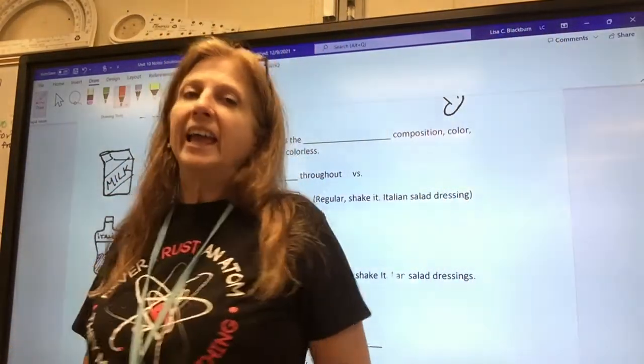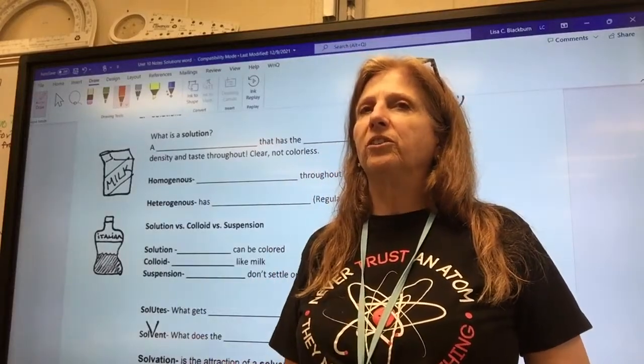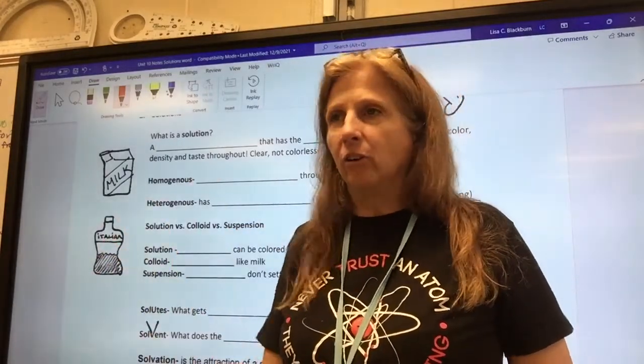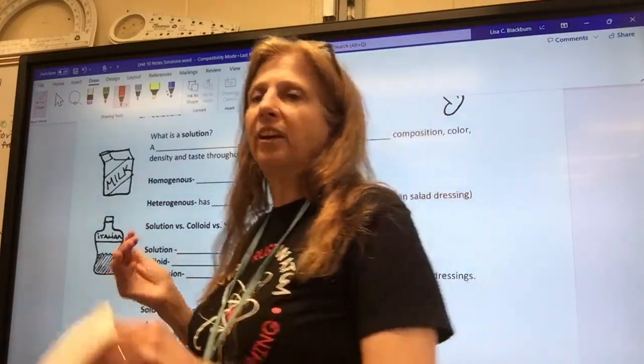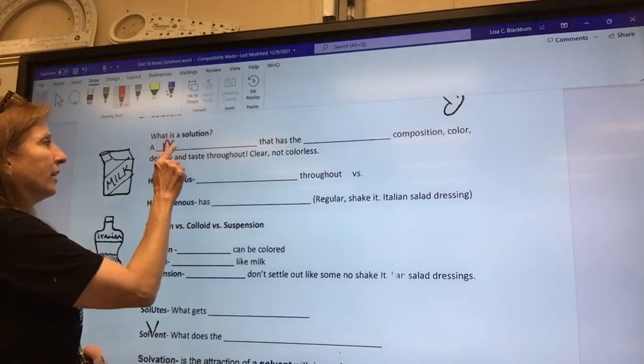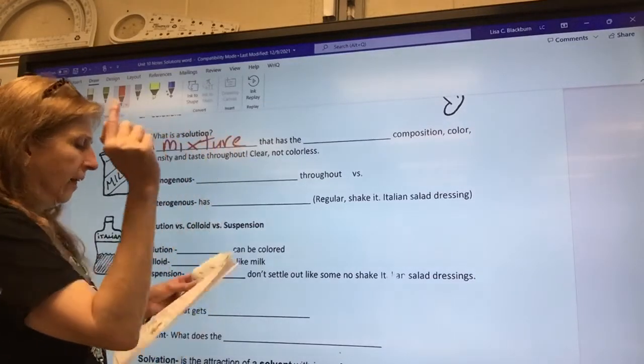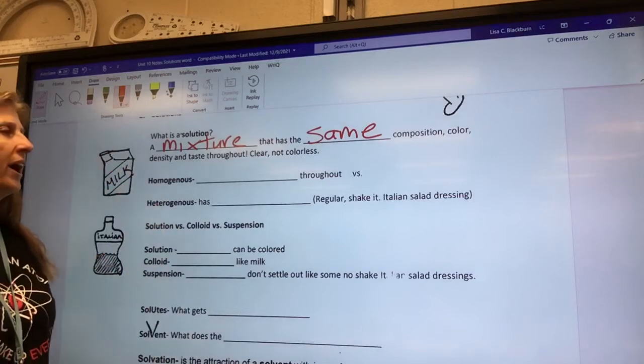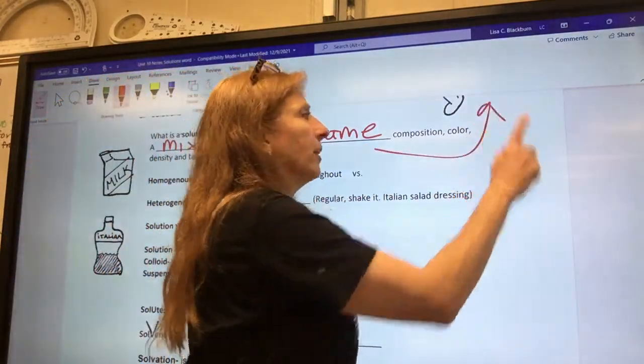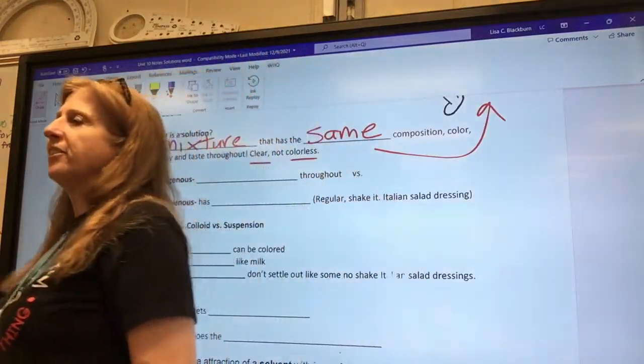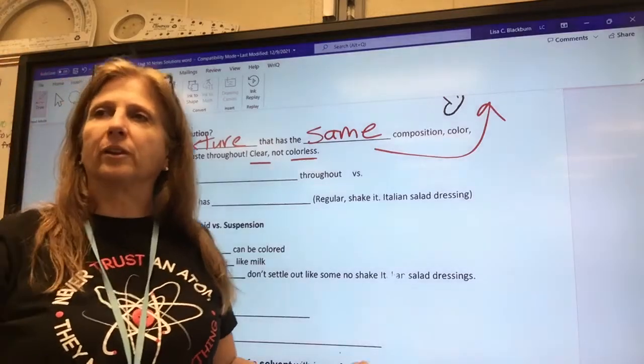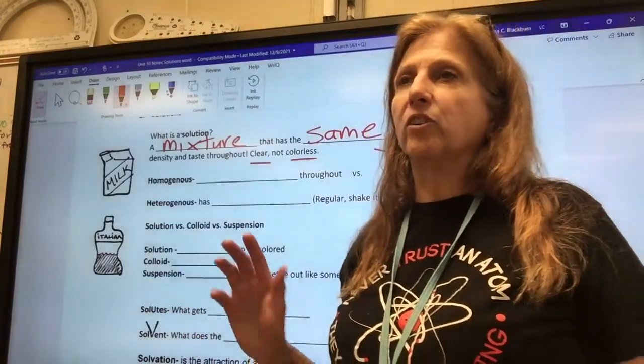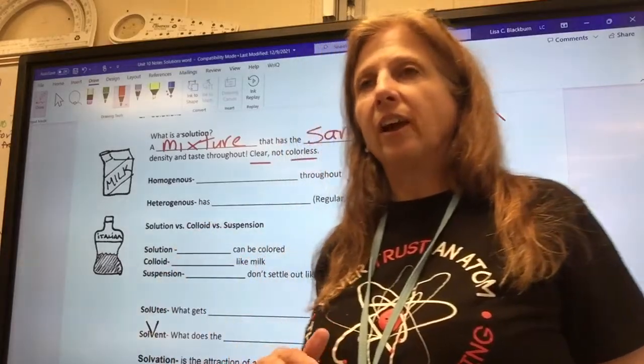What is a solution? Now, in chemistry, we will often use the word solution when it's not exactly technically correct. A lot of times we'll use the word solution for anything that's in a beaker. But it actually has a technical definition. A solution is a mixture that has the same composition, color, density, and taste throughout. It is clear, but not colorless. So our example is Kool-Aid. So Kool-Aid tastes the same at the top, middle, and bottom. It looks the same at the top, middle, and bottom. It is not colorless. Kool-Aid does not usually look like water. It's usually a color. My favorite is black cherry, which is a dark red color throughout.